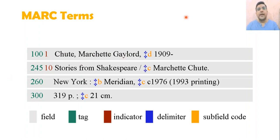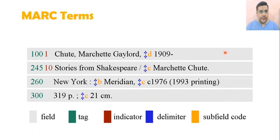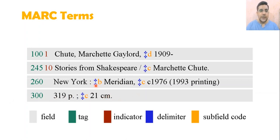Let me tell you more about the MARC structure. You can see four gray lines — one is for author, the second is for title, the third is for the imprint area, and the fourth is for the physical description of that particular record. So here we have four fields, and every line is called a field.